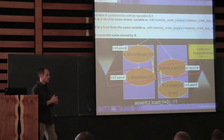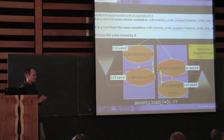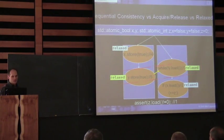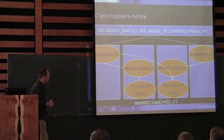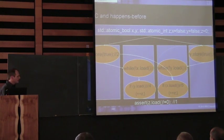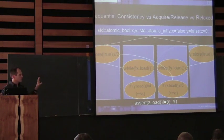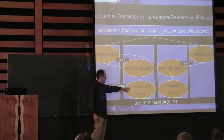Question: what's the difference between sequential consistency and acquire-release? They seem to be sort of equivalent in the ordering relationship. What an awesome question. What's the difference between sequential consistency and acquire-release? If only I had a slide for that. Oh — here we go.